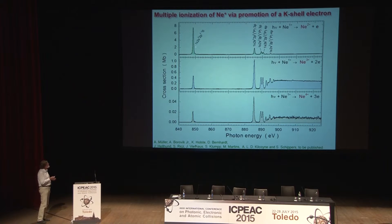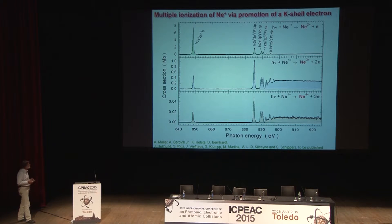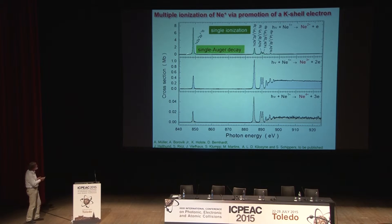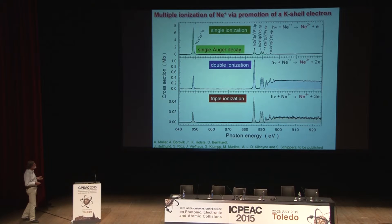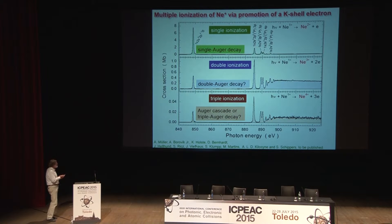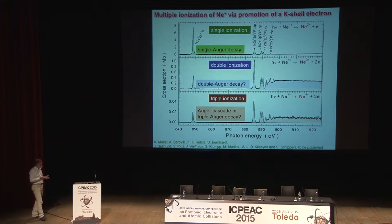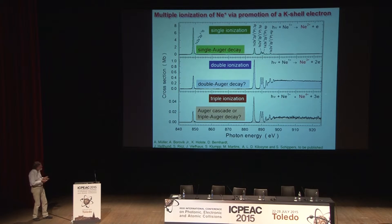We have not only looked at single resonances — we have looked at the whole spectrum across the K-shell ionization threshold. This signal arises from excitation of the K-shell and subsequent single Auger decay. In this spectrum, we also see double ionization, and here, triple ionization. Processes like double Auger or triple Auger decay would explain the occurrence of these peaks, but it is also possible that there are Auger cascades that produce these triply ionized neon 4+ ions.